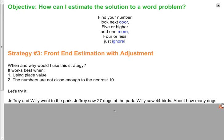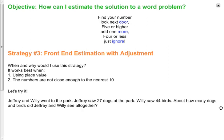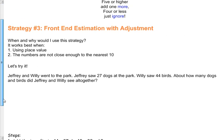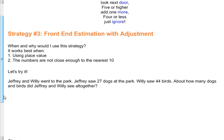This word problem says Jeffrey and Willie went to the park. Jeffrey saw 27 dogs at the park. Willie saw 44 birds. About how many dogs and birds did Jeffrey and Willie see all together?